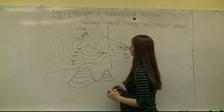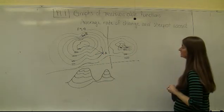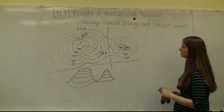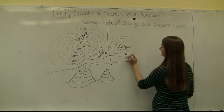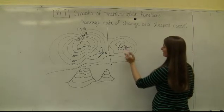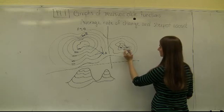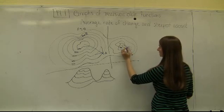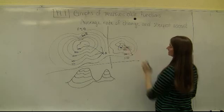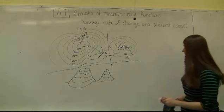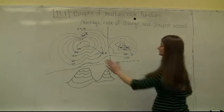Going off at some angle would mean taking a longer distance to cover the same vertical distance. There's no formula for the path of steepest ascent — it's just visualizing that to get to the top of the mountain as fast as possible, you should get to the next level curve in the shortest distance possible.